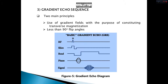Gradient echo sequence. The gradient echo sequence is the main family of our subject. It is based on two main principles. One of them is using a gradient field to constitute transverse magnetization, and the second is using a flip angle less than 90 degrees. In the slide, you can observe the pulse diagram of the gradient echo sequence.